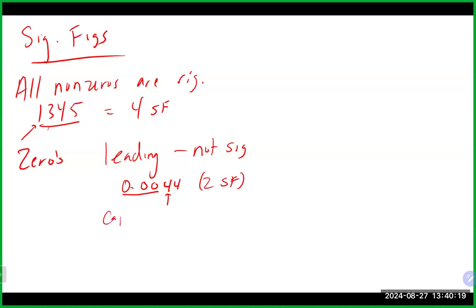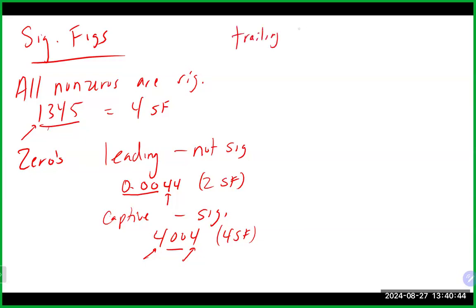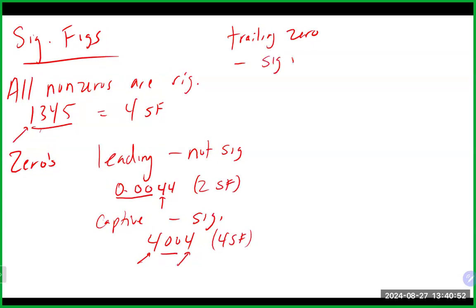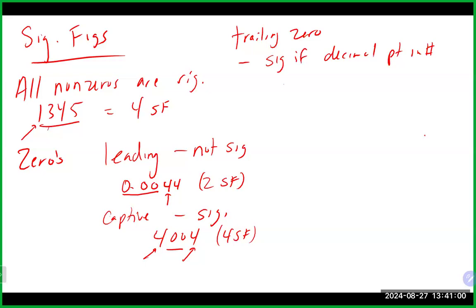Captive or trapped zeros — those between two non-zero numbers, like 4004 — are significant, giving 4 significant figures. Trailing zeros are significant if there is a decimal point in the number. For example, 0.003200 — the leading zeros are not significant, but we start counting at the 3. The two trailing zeros are significant because there is a decimal point, giving 4 significant figures in this case.